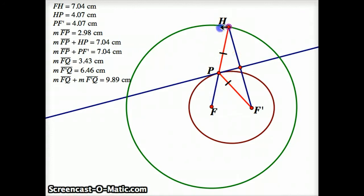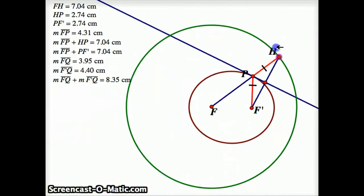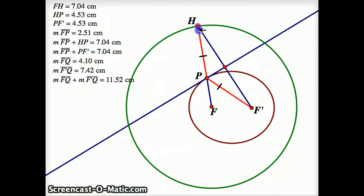As you can see, when I move this around, that point P does trace out an ellipse. And the reason why this works is because FPH is the radius of the circle.